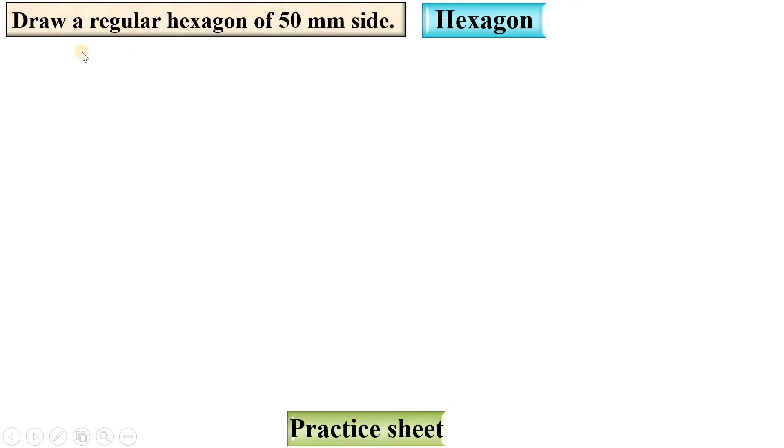Let's see first of all the description: draw a regular hexagon of 50 mm side. We are going to draw the hexagon that is by default regular hexagon if it is not mentioned. Regular hexagon means all six sides of the hexagon are equal.